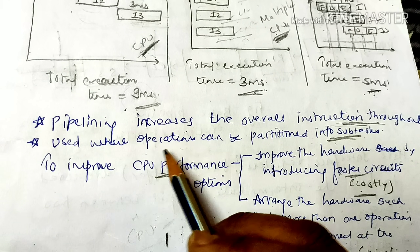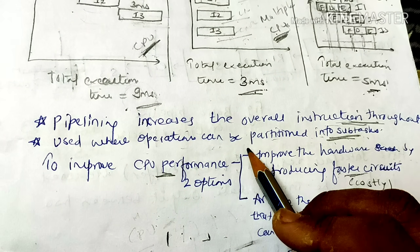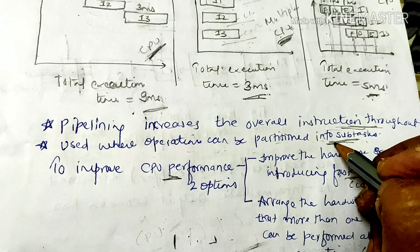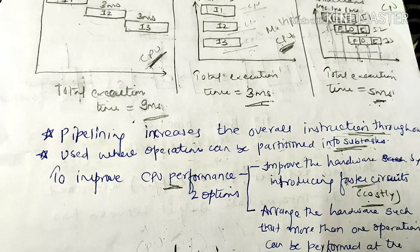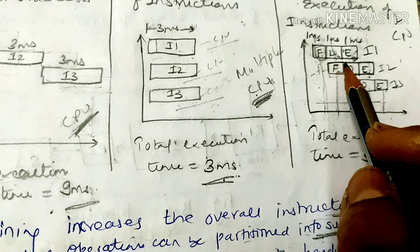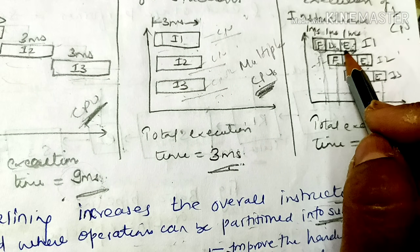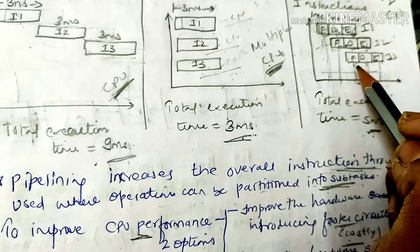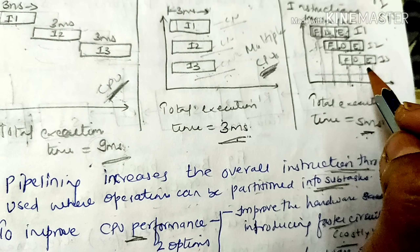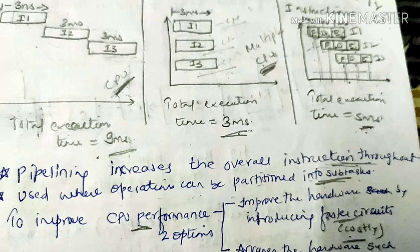Pipelining is used where operations can be partitioned into sub-tasks. When we can partition any operation into sub-tasks, then we can apply pipelining. Because we can divide the instruction into multiple stages: Fetch, Decode, and Execute. Any task that we cannot subdivide further, we cannot use pipelining for.